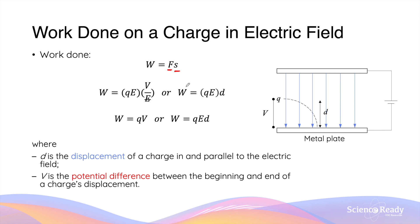We can derive two new equations from this generic work done equation. First, the force acting on the charge is the force due to the electric field, given by the charge of the particle, Q, multiplied by the strength of the electric field. So here I've replaced the force with Q times E. The displacement of the charged particle can be denoted by the symbol D.